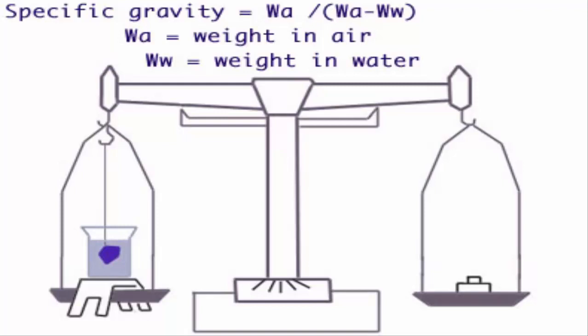Specific gravity is the ratio of the density of a substance to the density of a reference substance. Equivalently, it is the ratio of the mass of a substance to the mass of a reference substance for the same given volume.